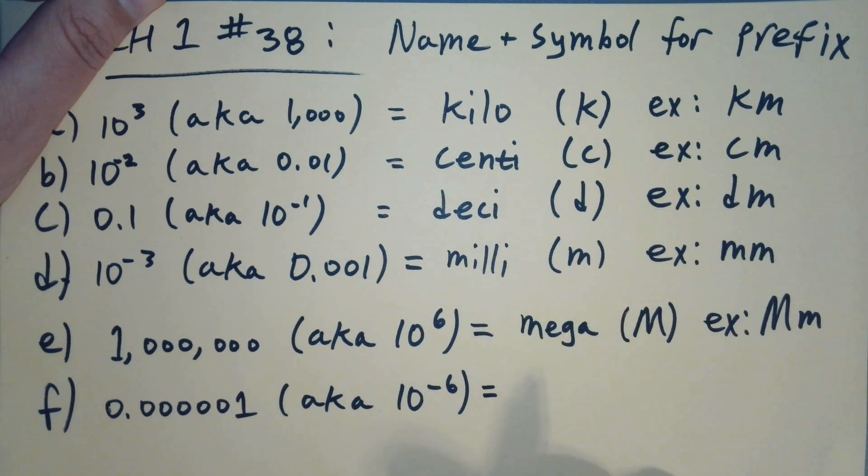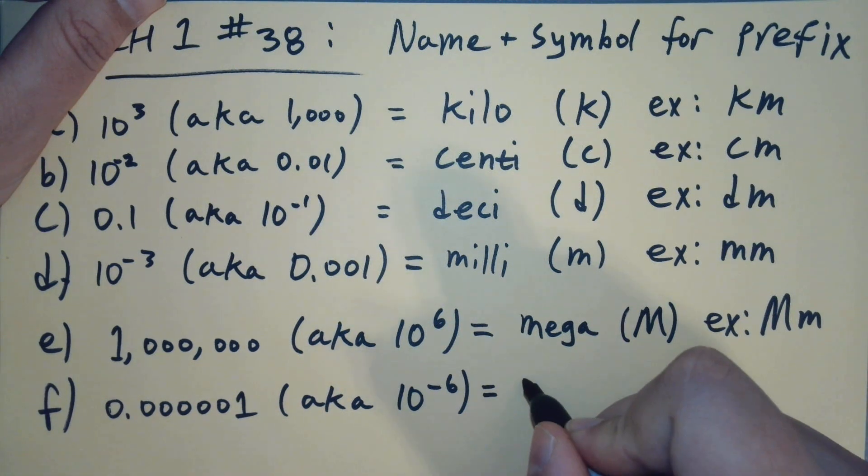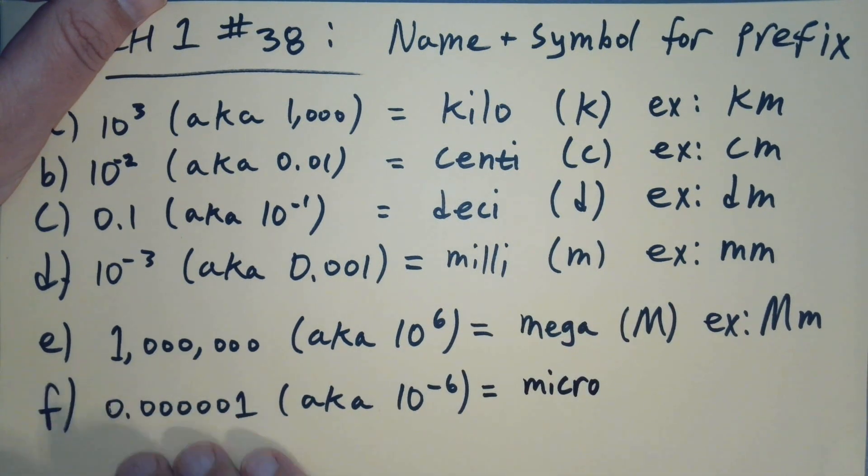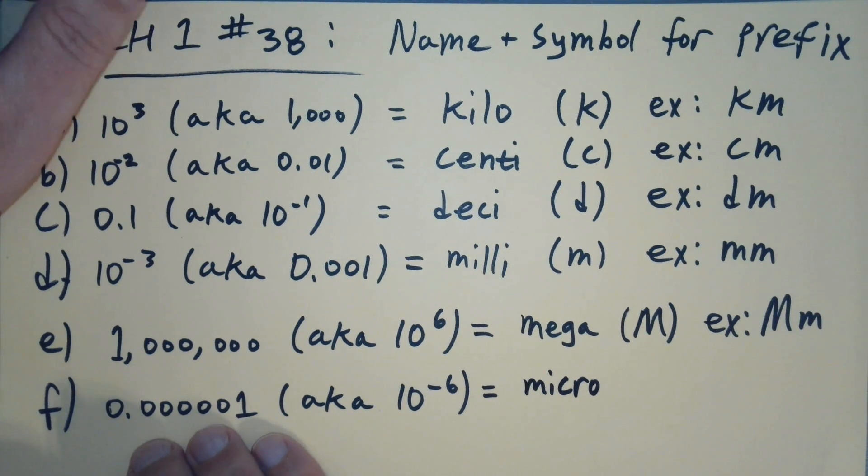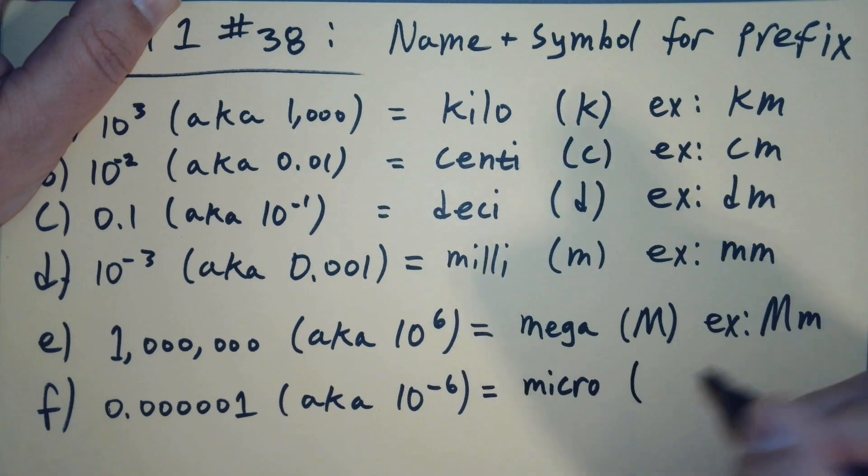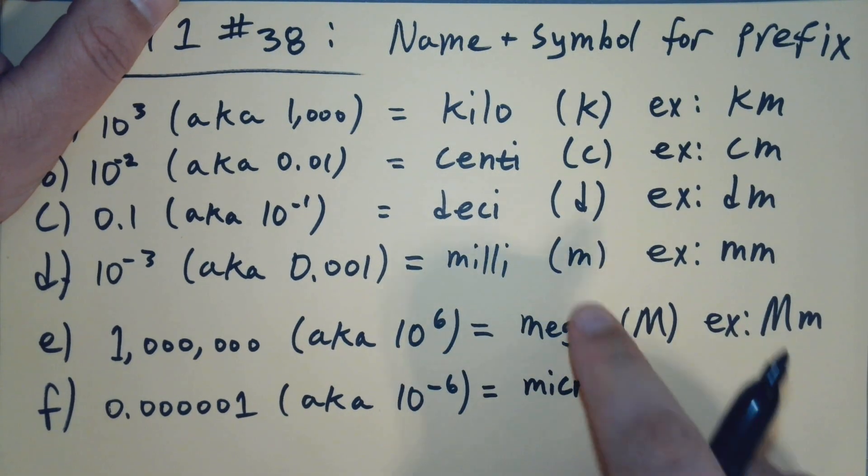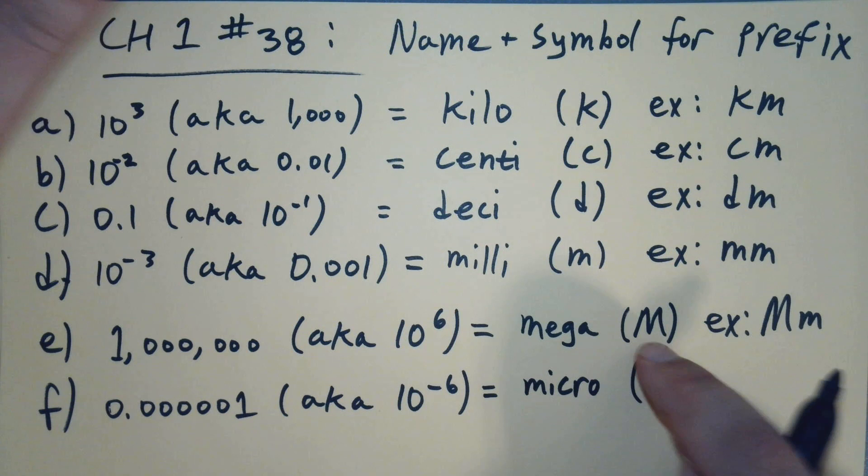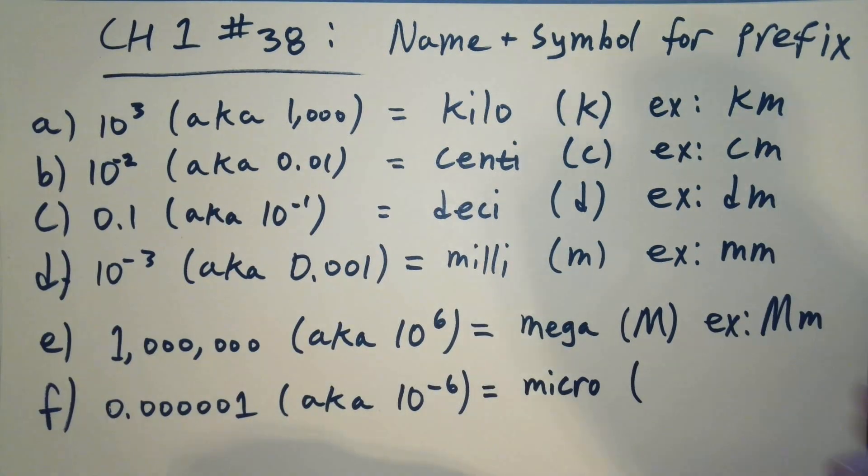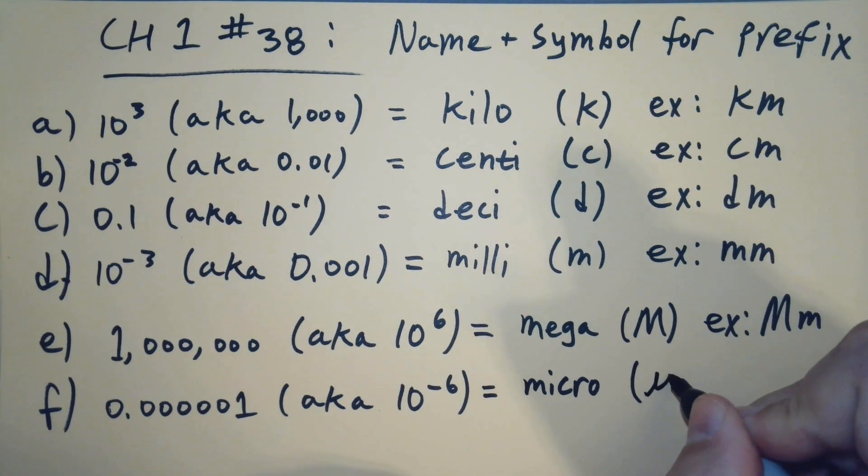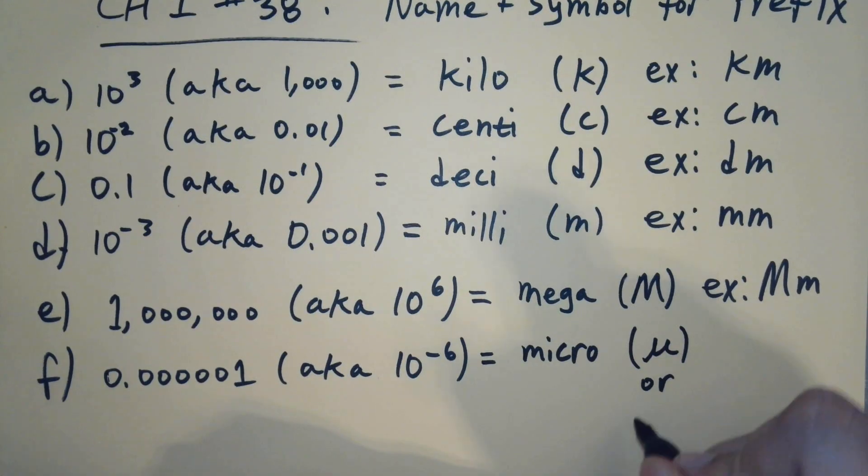If it's one millionth, what do we got? Well, this is micro. So one million micrometers would give us one meter. So this is one millionth of a meter. And now you're gonna go, wait a minute, lowercase m is taken, capital M is taken, what is left for micro?